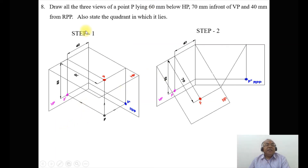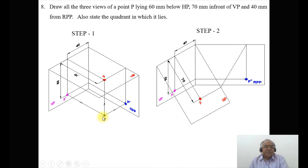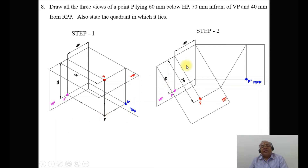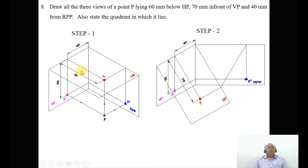The conditions will change as follows: 60 mm below HP and 70 mm in front of VP, and 40 mm in front of RPP, because we need the left side view. The left side view satisfies the condition that the object is between the plane and the observer. When the horizontal plane is cut and rotated down and the RPP rotated to the right, the corresponding images rotate accordingly, as shown here.